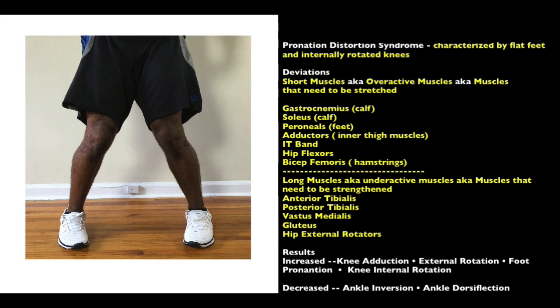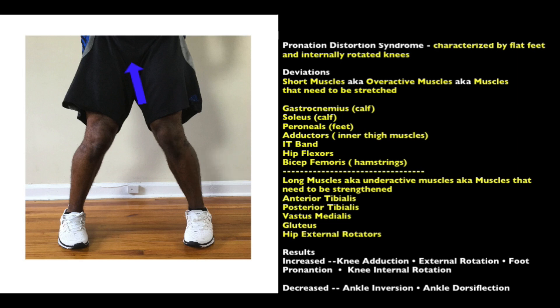The first deviation we'll cover is pronation distortion syndrome, characterized by flat feet and knees internally rotating. Looking at the muscles that cause this, the overactive muscles that need to be stretched are: the calf — the gastrocnemius and soleus — the peroneals, the adductors (inner thighs), the IT band, the hip flexors, and the bicep femoris.